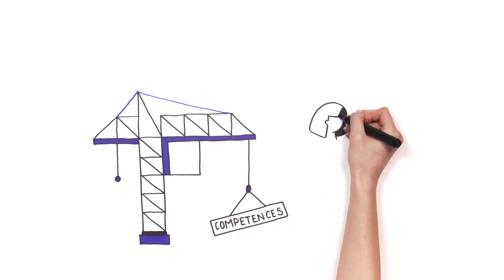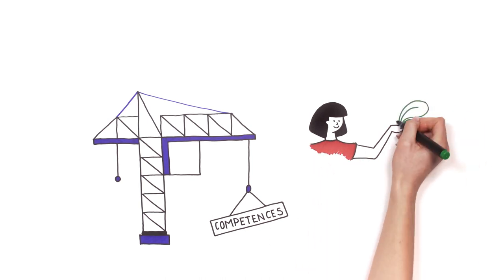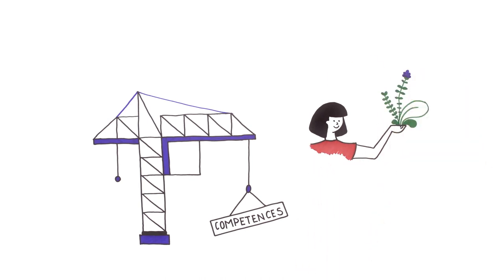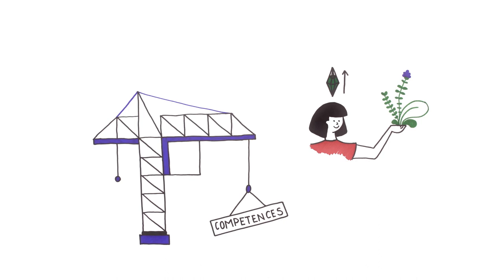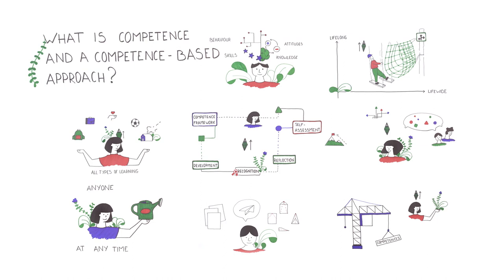It starts from what one is already competent in and builds upon that. In such a process, it is still possible, or even important, for an individual to fail. But it is the way this is being dealt with that can be seen in terms of competence development.